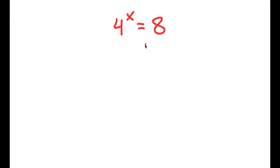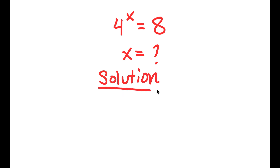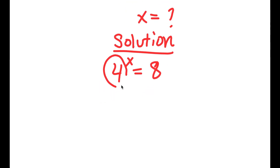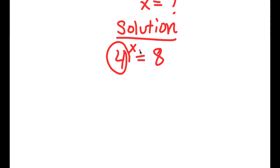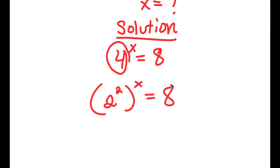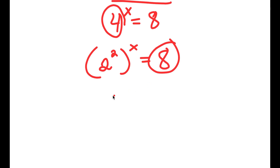In this problem, I have 4 to the power of x is equal to 8. To find x, I'll start by rewriting the problem. Now 4 is the same thing as 2 squared, so I'm going to rewrite this as 2 squared to the power of x. And 8 is the same thing as 2 to the power of 3, so I replace 8 with 2 to the power of 3. So I have 2 squared to the power of x is equal to 2 to the power of 3.